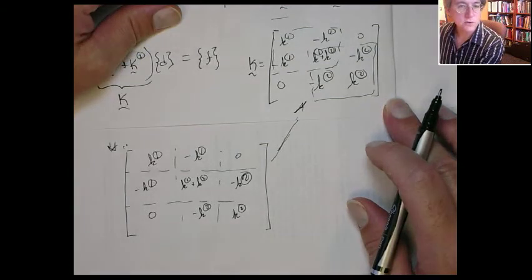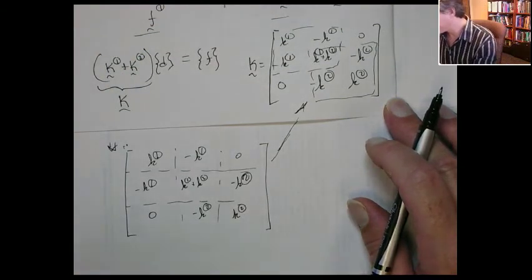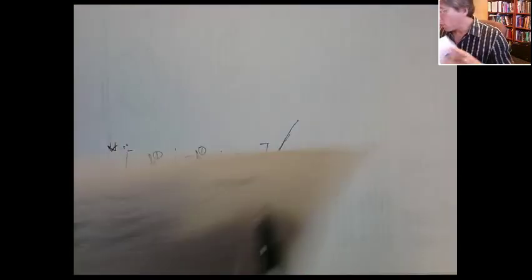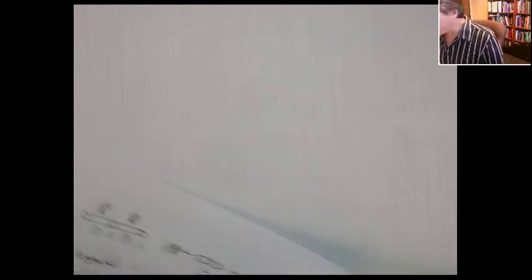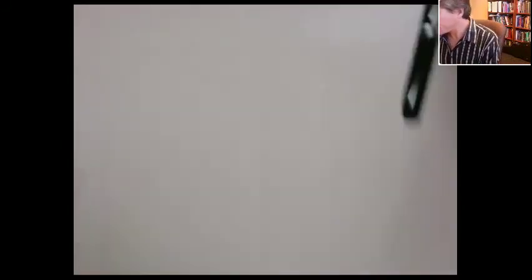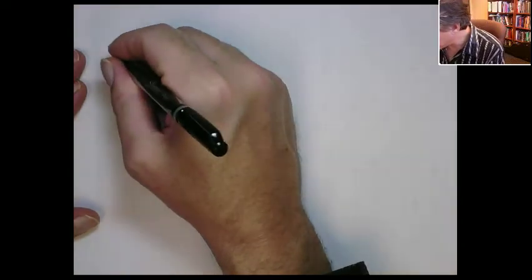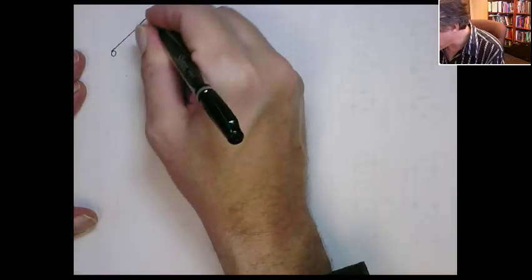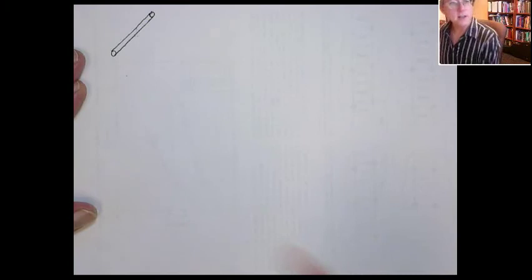It's just the rows and columns are switched because of the renumbering. One more quick example — although I'm not really requiring it for this class, it's not too bad to see how this stuff kind of goes. Let's consider the following element, which we'll talk about a little later on. This is a truss element.